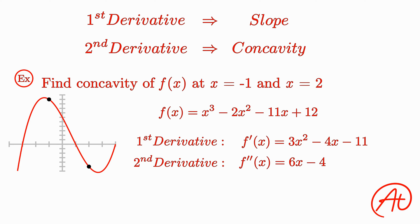To find it at x equals negative 1, we plug in negative 1 to our second derivative. And doing the math, we find that our concavity is negative 10 at this point, which is negative, just as expected.